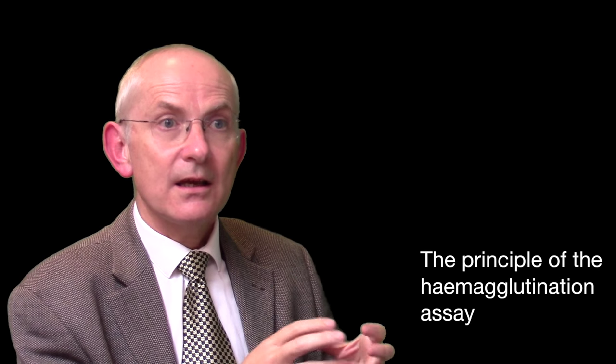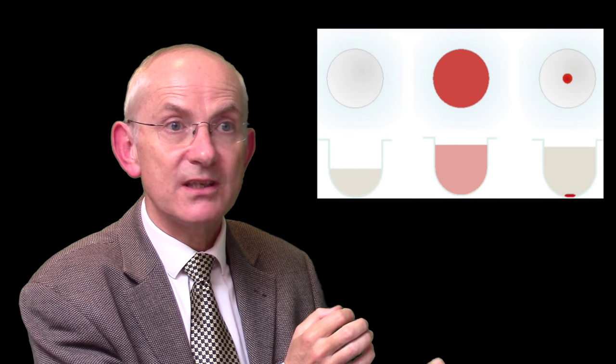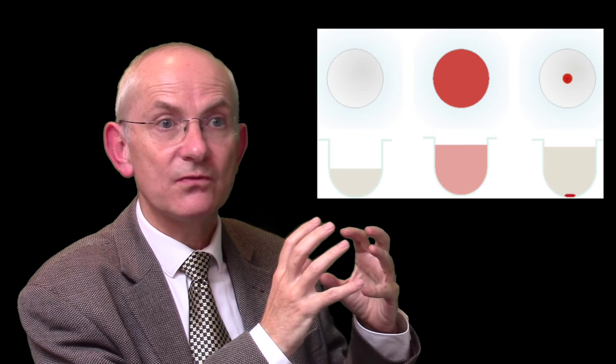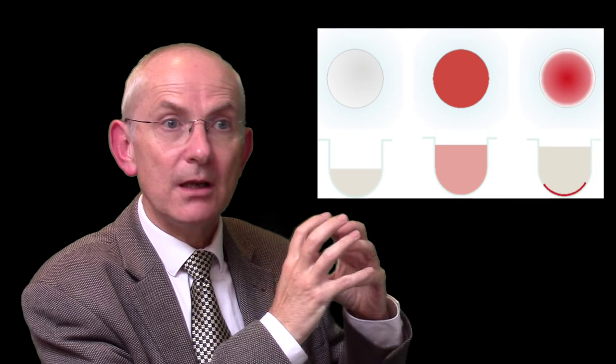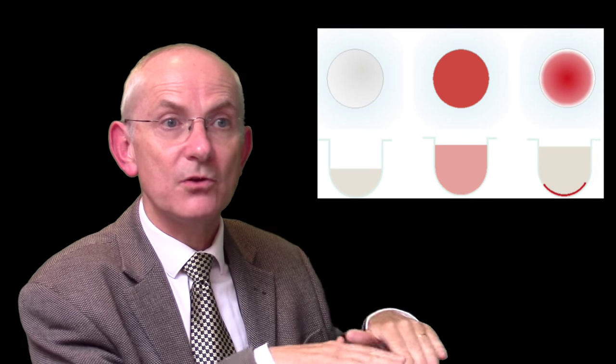As you'll remember from that assay, red cells on their own will fall to the bottom of a tube or well and produce a button that you can see with the naked eye. But if you mix them first with the right sort of virus, they will clump with the virus and prevent it from forming a button at the bottom, but it will form a shield instead.